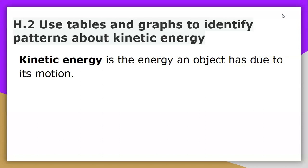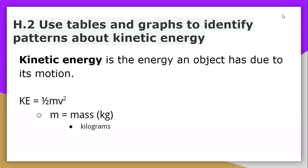Kinetic energy is the energy an object has due to its motion. The formula for kinetic energy is one-half mass times velocity squared, where m is mass typically in kilograms, and v is velocity in meters per second.